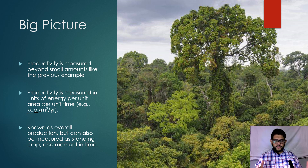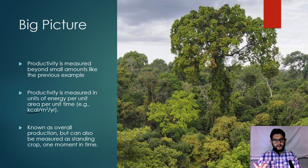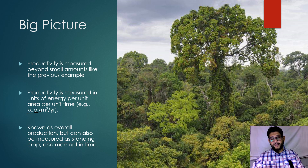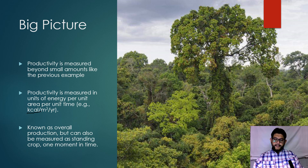It's important to know what NPP, GPP, and R represent: net productivity, gross productivity, and respiration. You will see that on the AP exam, and it's an equation you'll just have to know and be able to recall when they reference it.